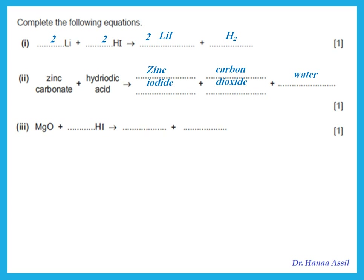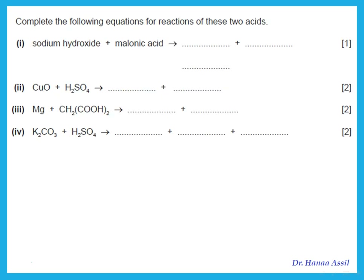Magnesium oxide plus hydroiodic acid: magnesium oxide is a base, so acid plus base gives salt plus water. The salt is magnesium iodide — remember magnesium has valency 2, so put a 2 under iodine — plus water. Copper oxide plus sulfuric acid gives copper sulfate plus water.